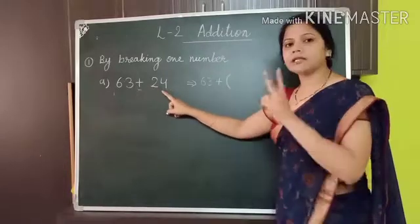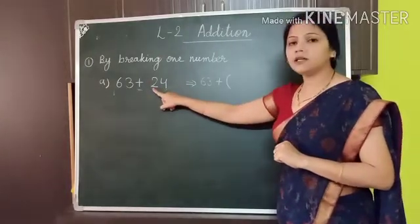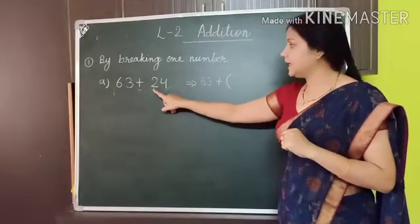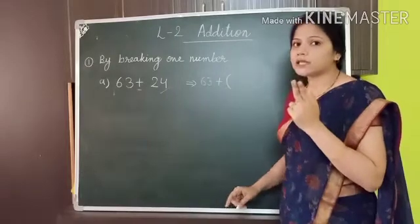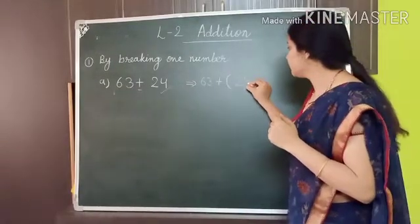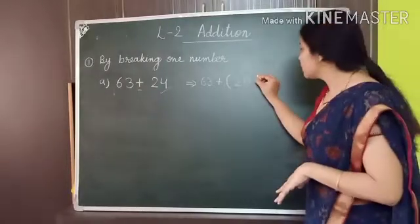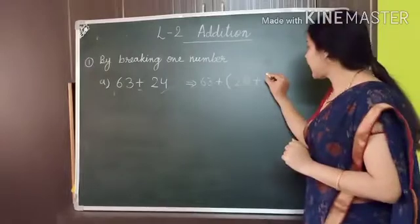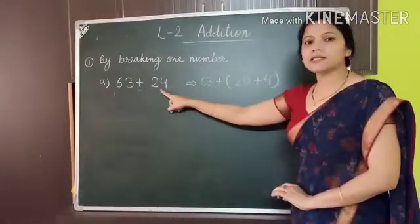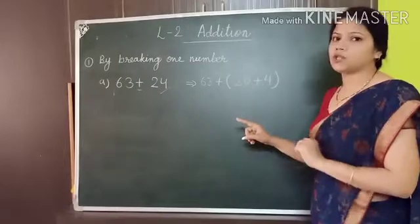This number is having two digits. One is placed at one's position and the second one is placed at ten's position. Here, 2 is placed at ten's position — so how many tens are there? Two tens. Two tens is equal to twenty. And how many ones are there? Four ones. So we give plus sign and four ones, then close this bracket. So we have broken this number: twenty and four ones.